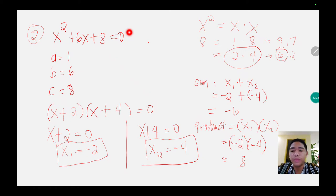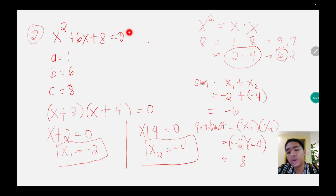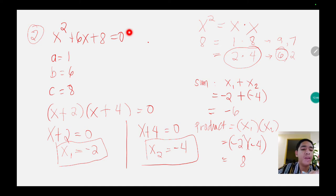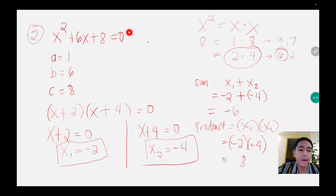x sub 1 is negative 2 and x sub 2 is negative 4 — actually you can interchange those roots; they can be swapped and both are correct. Their sum is negative 6 when the two roots are added, and when multiplied we get positive 8. Any questions so far?